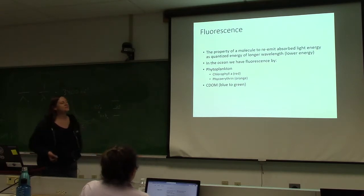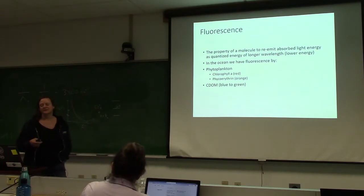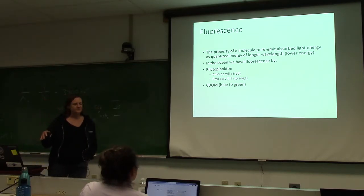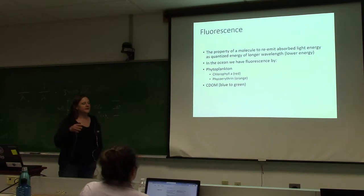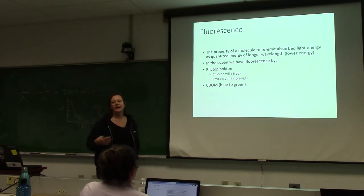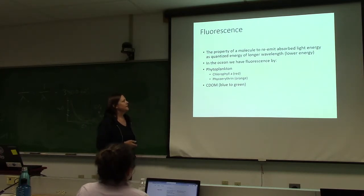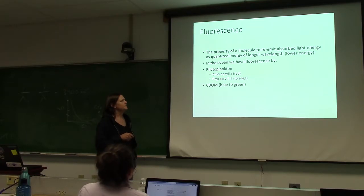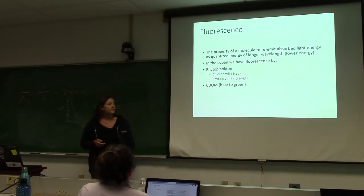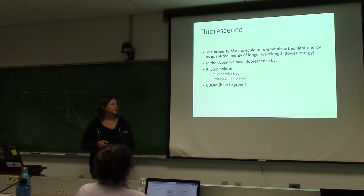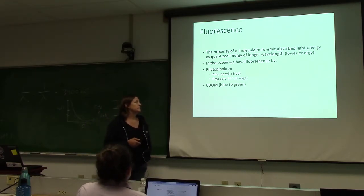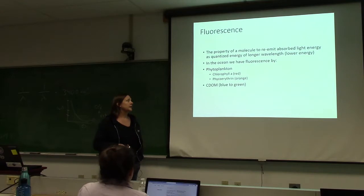Fluorescence is a property of a molecule that absorbs energy to re-emit that energy at a longer wavelength. In the ocean, we primarily think about fluorescence by chlorophyll A, which happens in the red. Phycoerythrin fluoresces in the orange. And CDOM — colored dissolved organic matter — fluoresces somewhere in the blue and green.